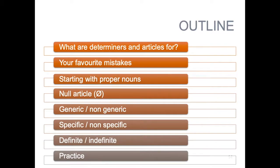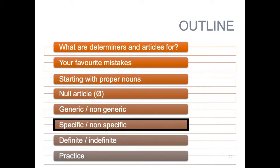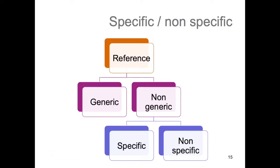Let's turn now to another distinction, to complexify things a little bit: the distinction between specific and non-specific. This is within the non-generic reference — you must also distinguish between specific and non-specific references. The distinction can be tricky, so you really need to pay attention to the context of the noun phrase you are studying. Remember that tree: a reference can be generic or non-generic. But when it is non-generic, you can also have the choice between a specific and a non-specific reference. Most of the time it's going to be specific, but sometimes you will have a hard time deciding.